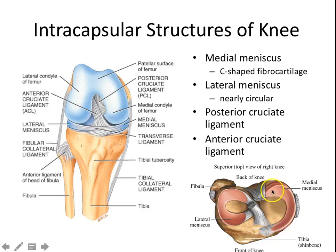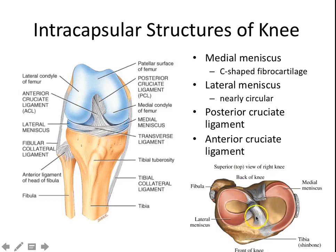Here is the front and the back of the knee. You can see the posterior cruciate ligament and the anterior cruciate ligament — all these structures making the knee just that much more sturdy.